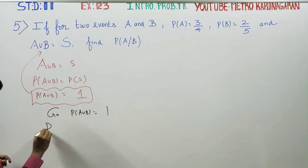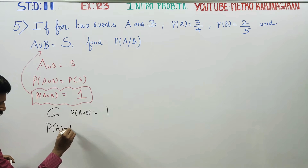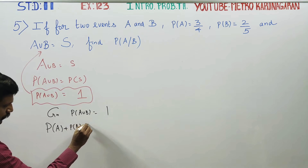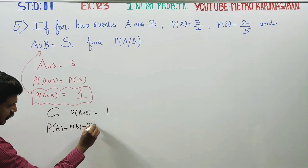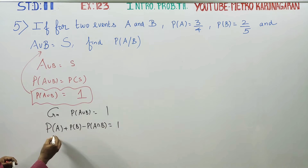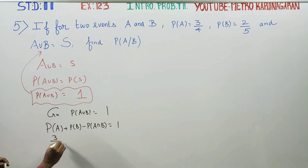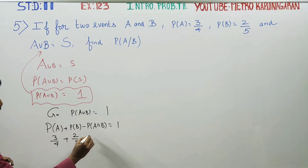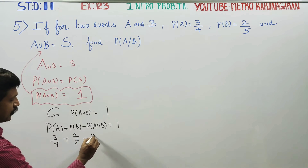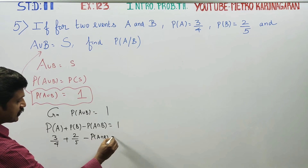What is the probability of A union B formula? Probability of A plus probability of B minus probability of A intersection B is equal to 1. Probability of A is 3 by 4, probability of B is 2 by 5, minus probability of A intersection B equals 1.